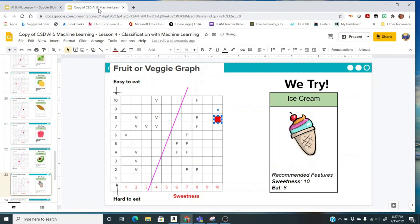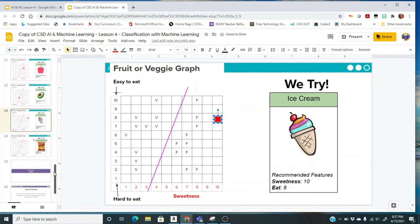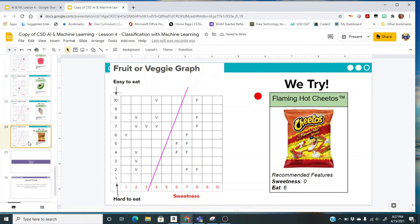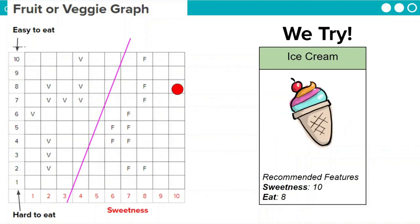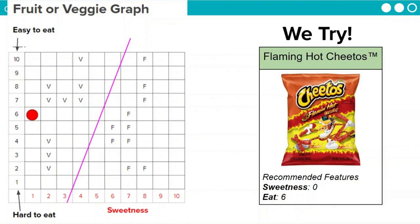Our last one is also one of these silly things that would still get classified because the computer doesn't think. It just does exactly what it was told. A cheeto has no sweetness, and it's pretty easy to eat, so it would be classified as a veggie. I think we can all agree these examples are pretty silly. They're an example of using a model for something other than what it was intended for.